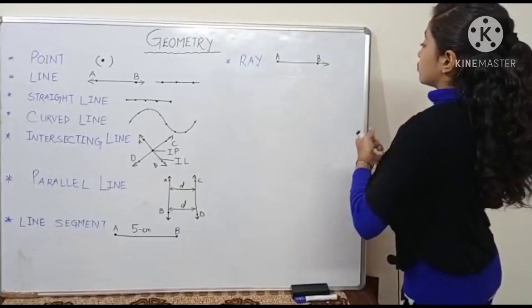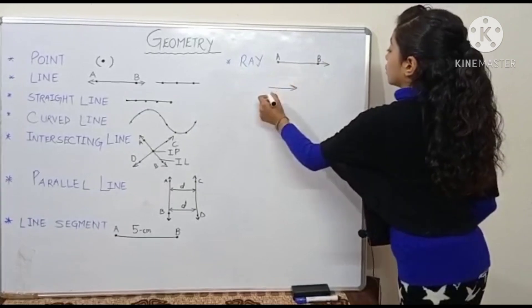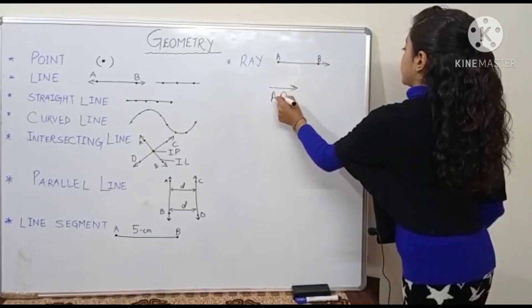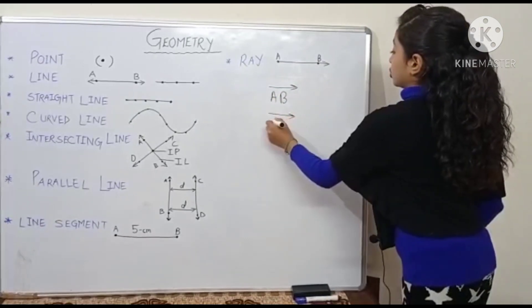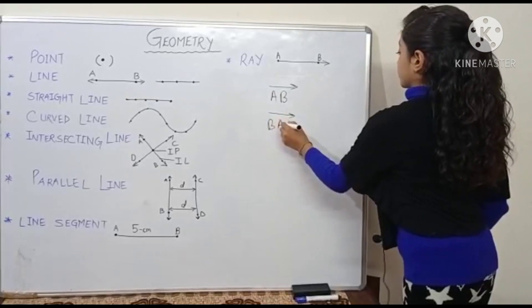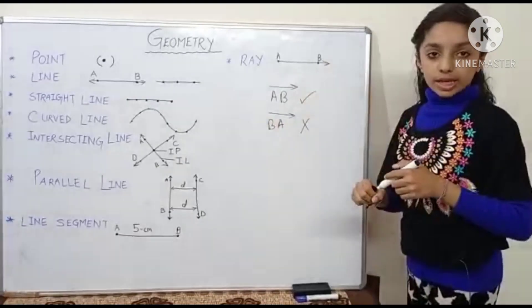And representation of ray is always A to B, not B to A. This is correct and this is wrong.